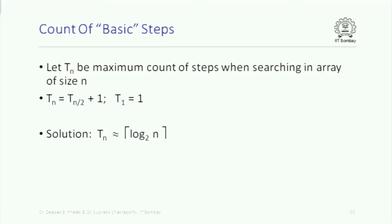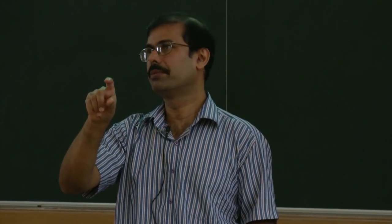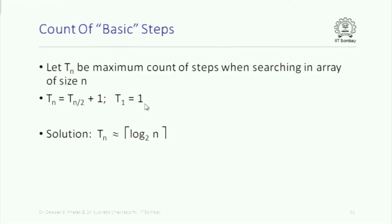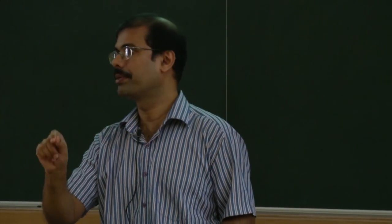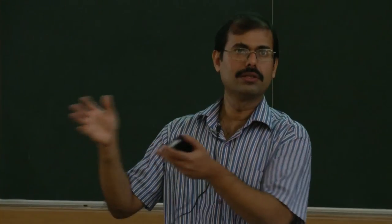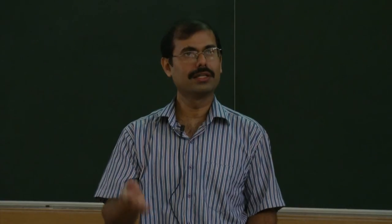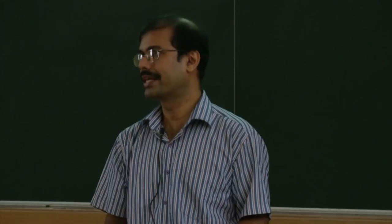How many basic steps does binary search take? If the array has size 1, there is just one basic step. For size n, computing the mid index and comparing with a[mid] is one basic step, then we recurse on half the array. So T(n) = T(n/2) + 1, with T(1) = 1, whose solution is log n. Binary search takes log n steps versus n steps for linear search — this is exponentially better. In fact, one can show that searching for an element requires at least log n comparisons in the worst case, so binary search is optimal.